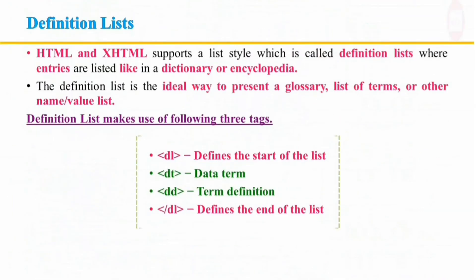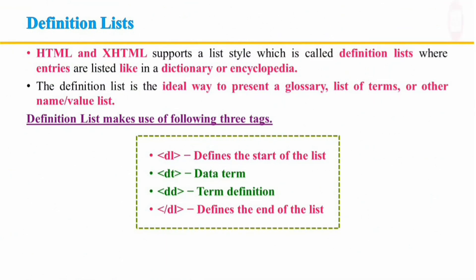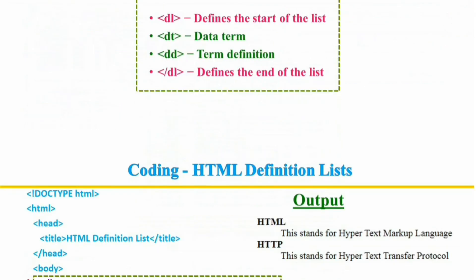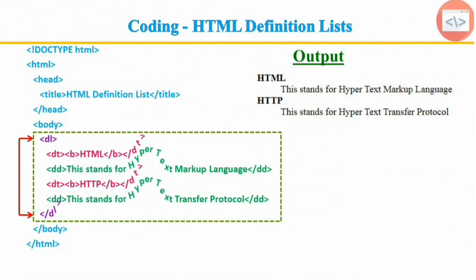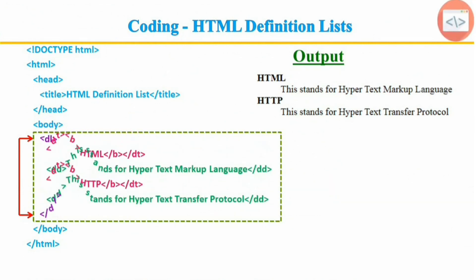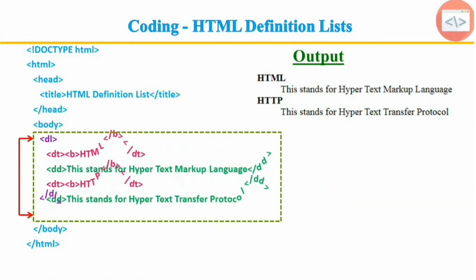An HTML description list, or definition list, displays elements in definition form like a dictionary. The dl, dt, and dd tags are used to define a description list. The dl tag defines the start of the list, the dt tag defines the data term, and the dd tag defines the term definition. The closing dl tag defines the end of the list. Browsers usually render the definition list by placing terms and definitions on separate lines, where the term definitions are slightly indented.